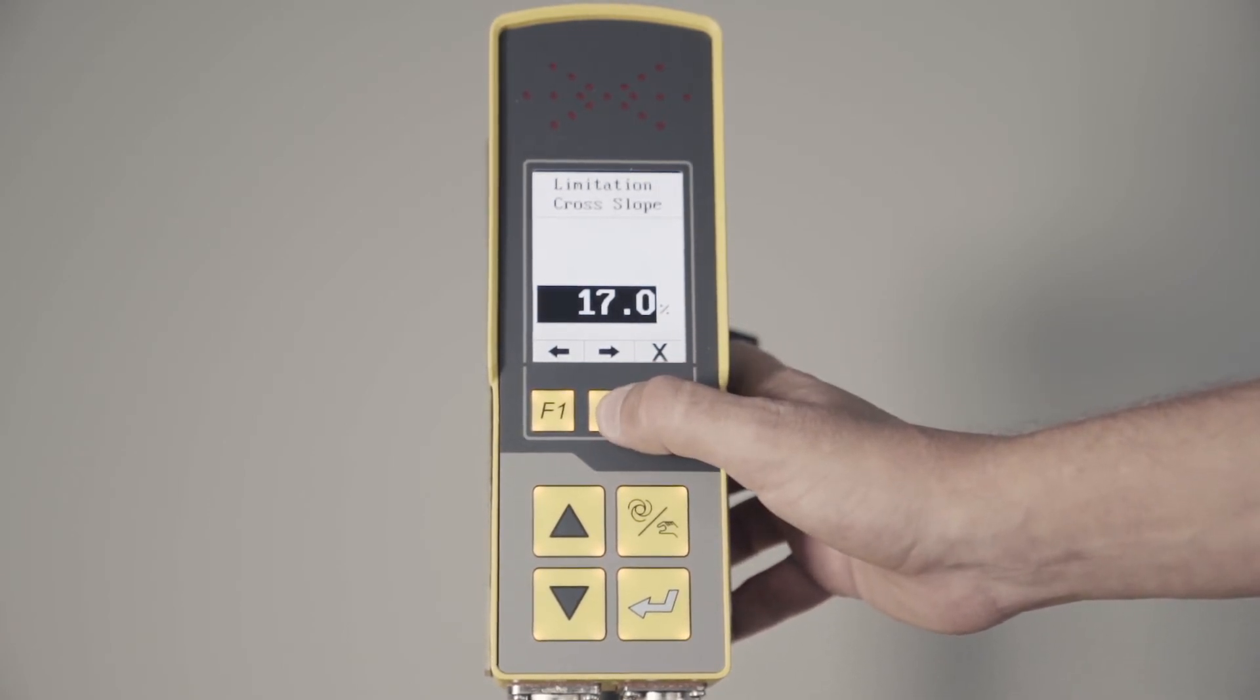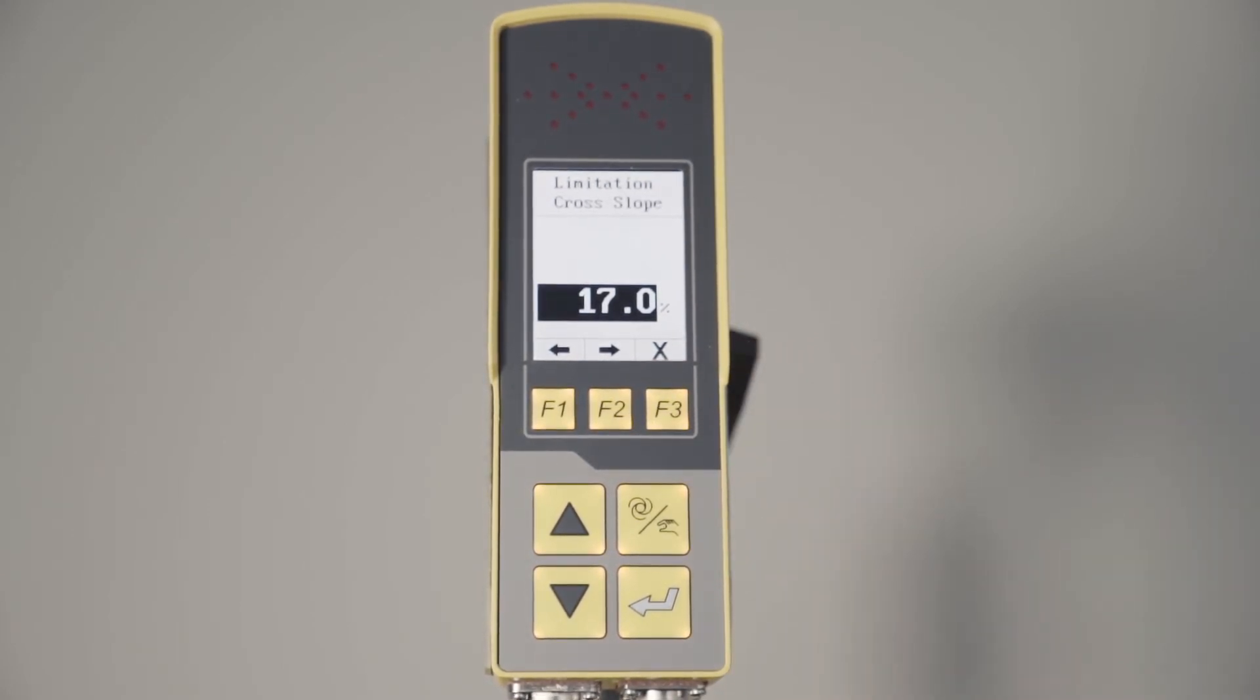Cross slope limitation - the highest that goes is 17%. That's where we leave it, it's a default. If you're really getting higher than that, odds are you're going to roll the machine over.